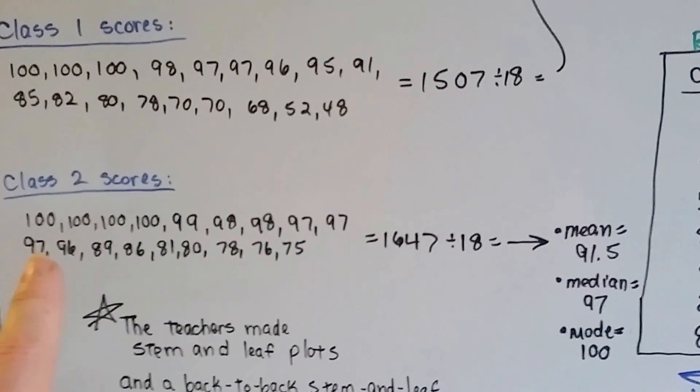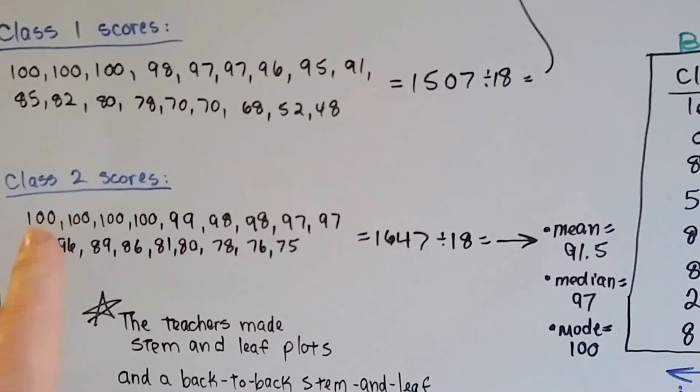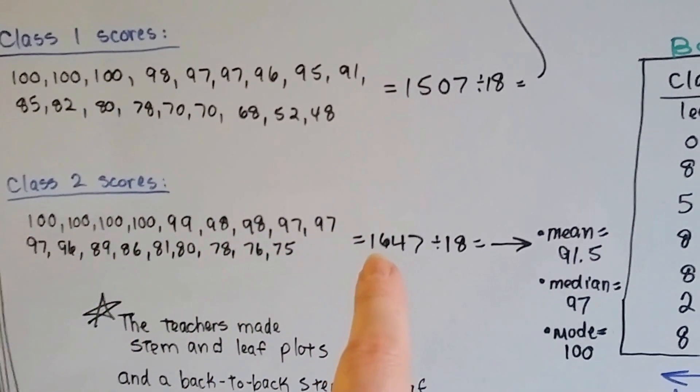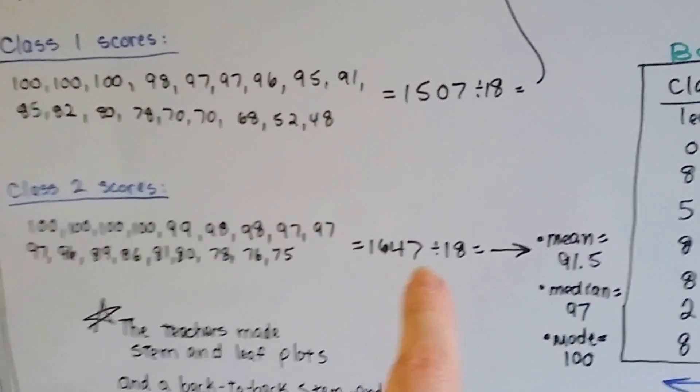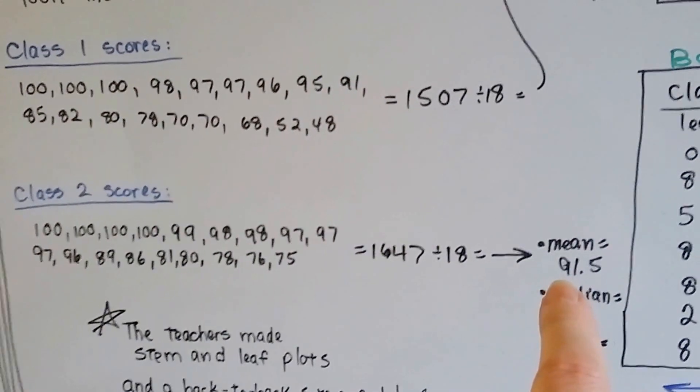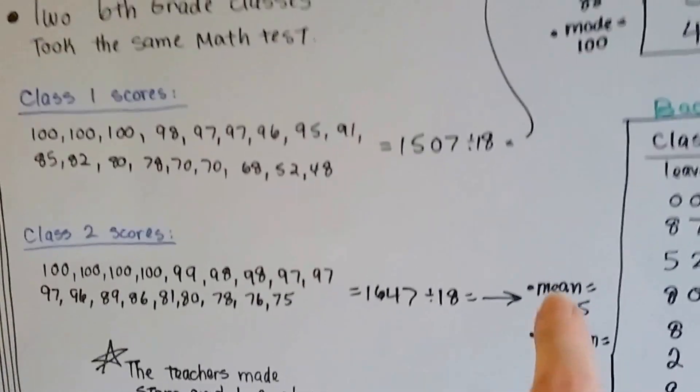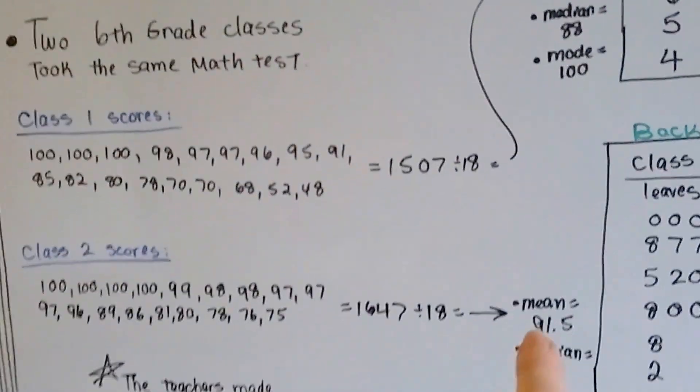For class two, when you total up all 18 numbers, it comes out to 1,647. When you divide that by 18, the mean, the average, is 91.5. So you can see they did better in the second class.